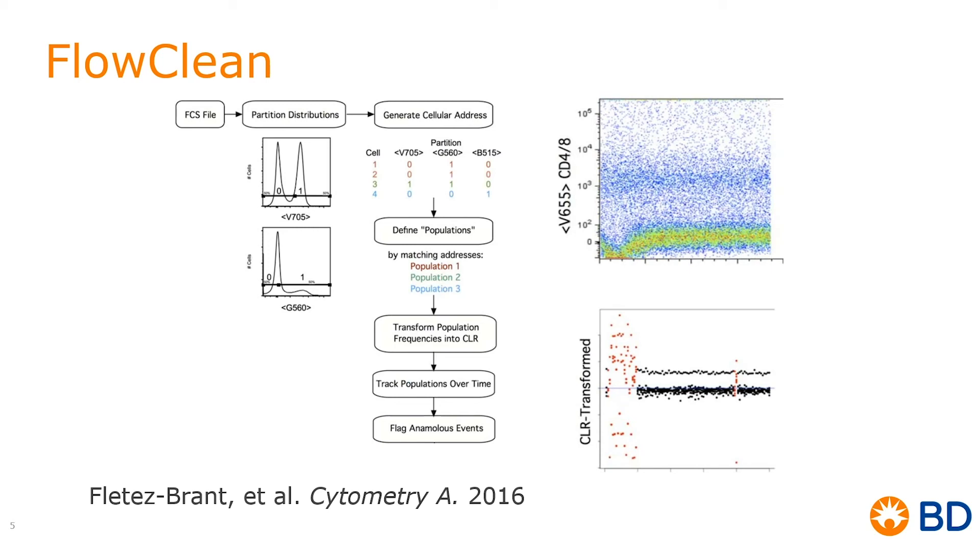Therefore, it concatenates them into one population, and those are then generating several populations based on your own sample. This is then transformed into CLR, and as we have a graphical representation of CLR on your right, we track these populations over time, and any that differ will then get flagged as an anomalous event. You will be given two outputs, FlowClean good data and FlowClean bad data. We will go through this with some real-time data analysis so you can see how this works.